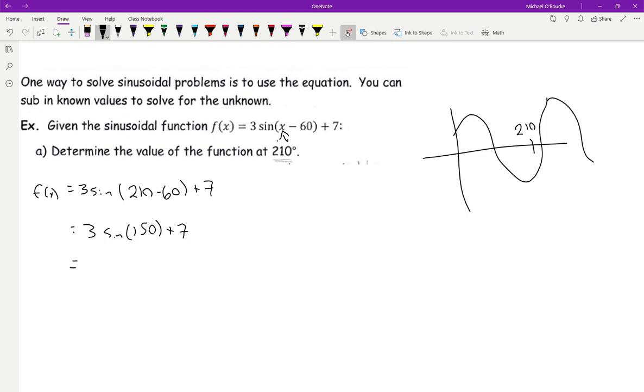The way we find the answer is we just use our calculator to do this part. So the way I would write this in, I usually do the sine first. Sine 150 equals times 3 plus 7 equals 8 and a half is my answer.